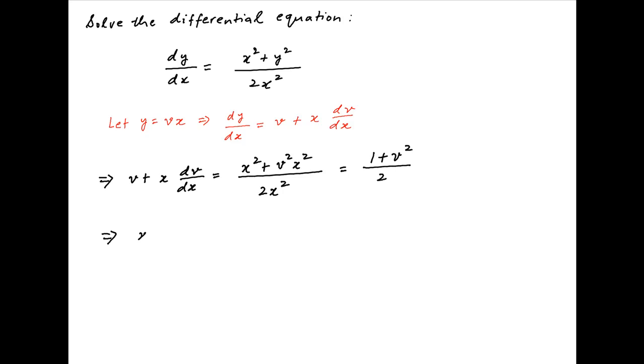And the right-hand side is therefore equal to (1 plus v²)/2. Subtracting v from both sides, we get x times dv/dx equals (1 plus v²)/2 minus v.